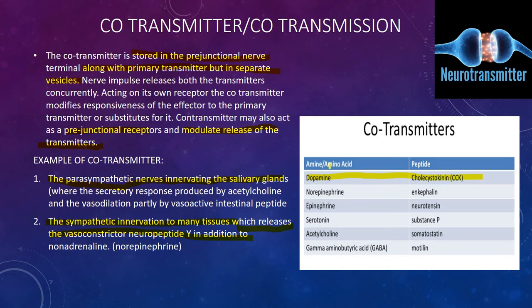Among the amines and amino acids, examples of co-transmitters include dopamine, norepinephrine, epinephrine, serotonin, acetylcholine, and gamma-aminobutyric acid (GABA). Among the peptides, examples include cholecystokinin, enkephalin, neurotensin, substance P, somatostatin, and motilin.